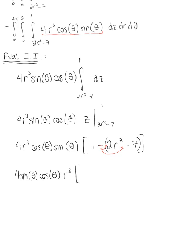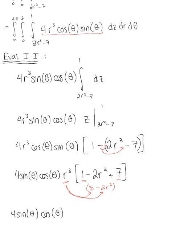Distributing the negative gives 1 minus 2r squared plus 7, and combining like terms gives 8 minus 2r squared. Distributing r cubed through, we get 4 sinθ cosθ times (8r cubed minus 2r to the fifth).